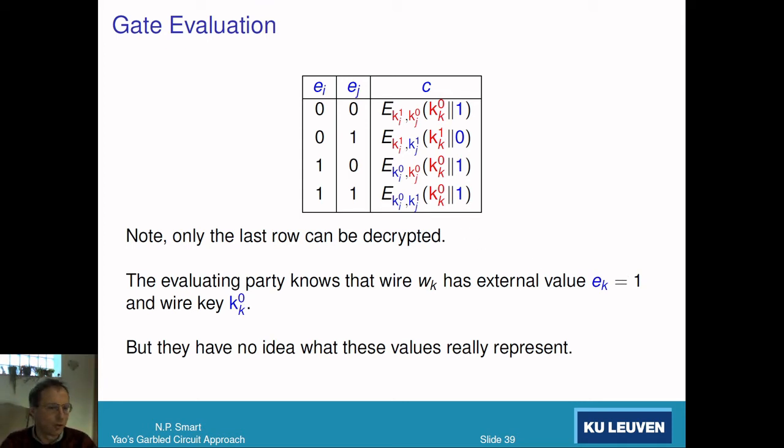That's how gate evaluation works. We only have to decrypt one row. Because we only decrypt one row, we don't need an IND-CCA encryption scheme because we don't need the other rows to return error. The other rows just return nonsense. We don't need to detect its nonsense, so the encryption scheme could be much simpler.